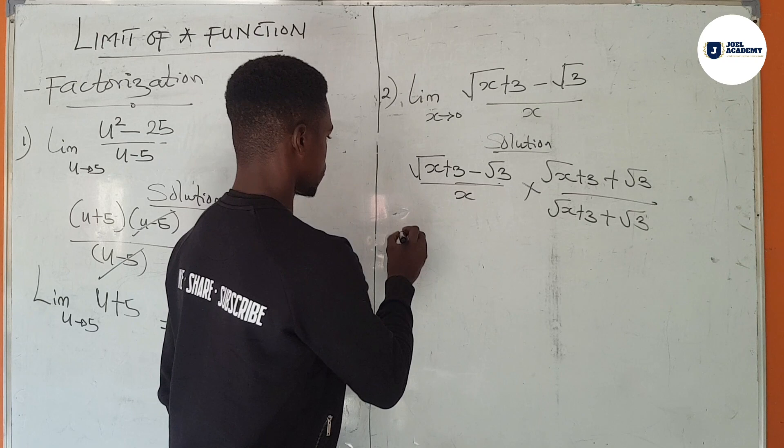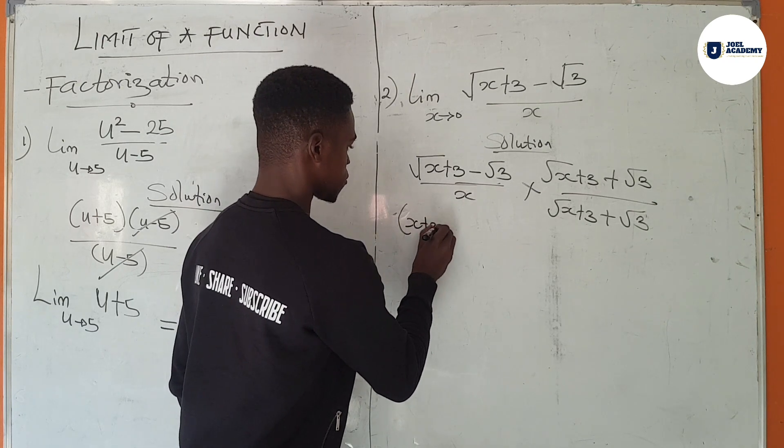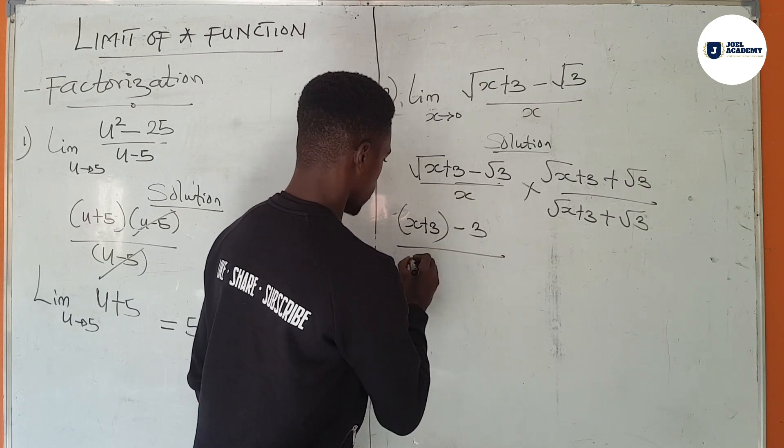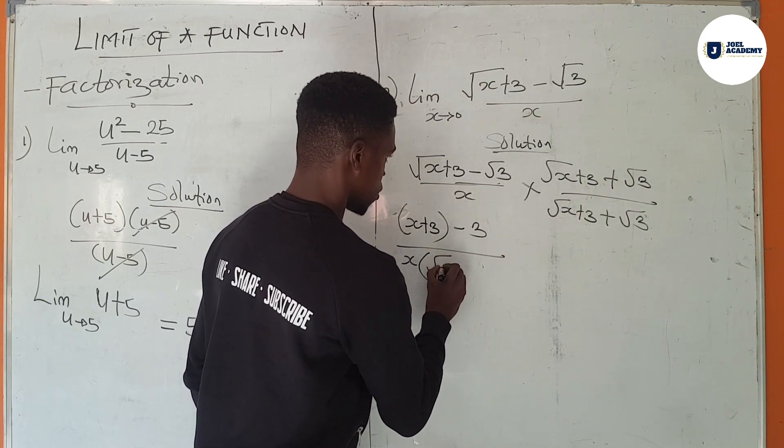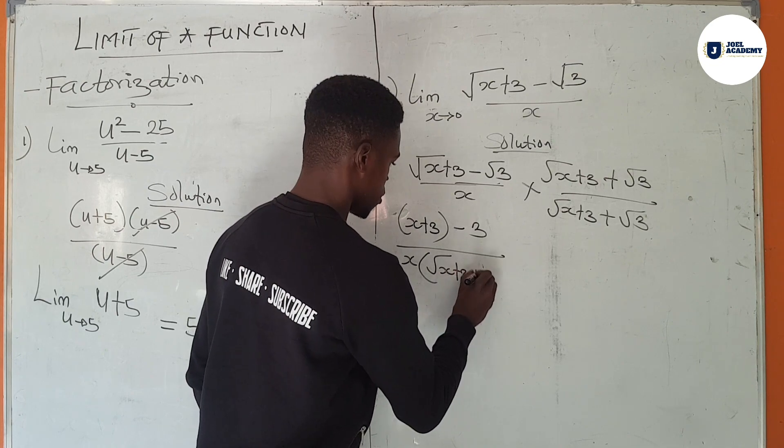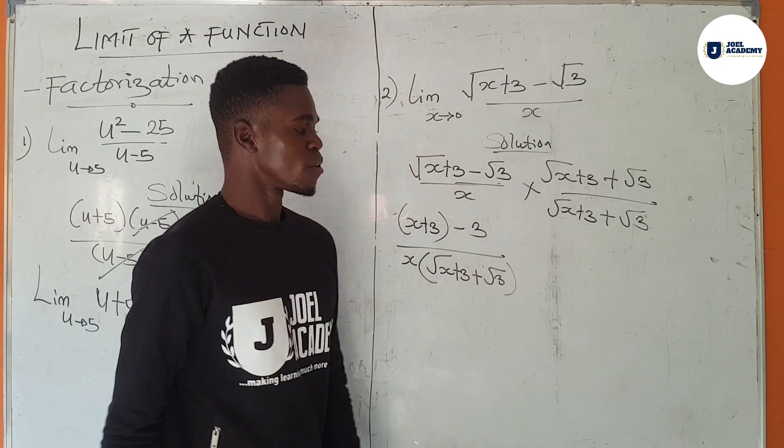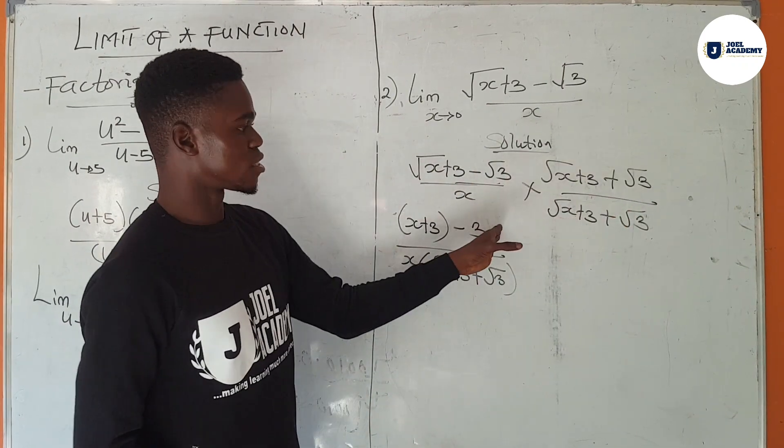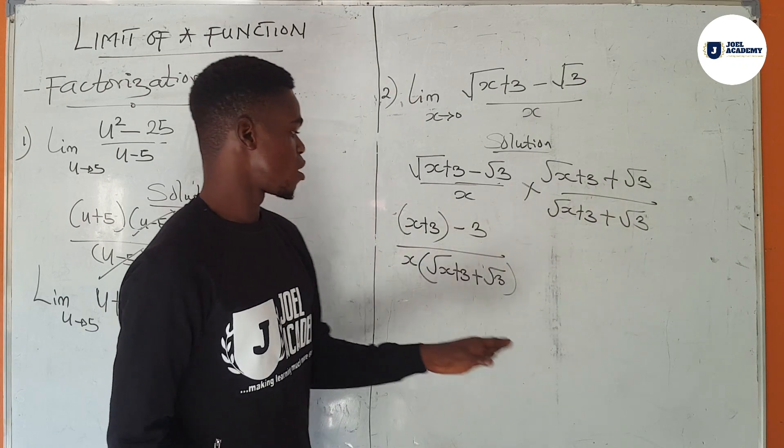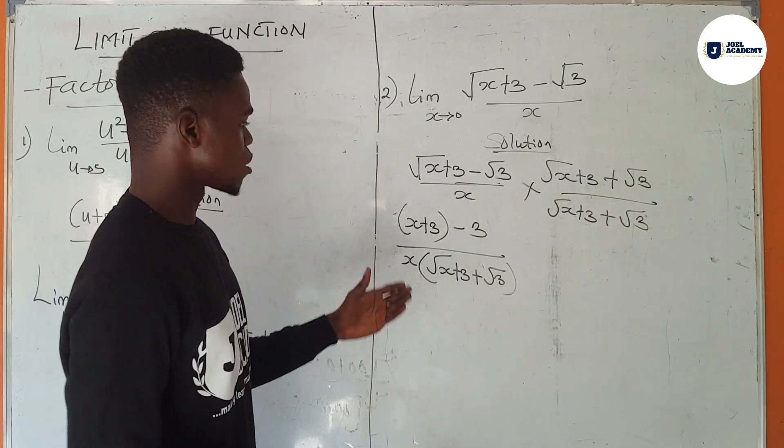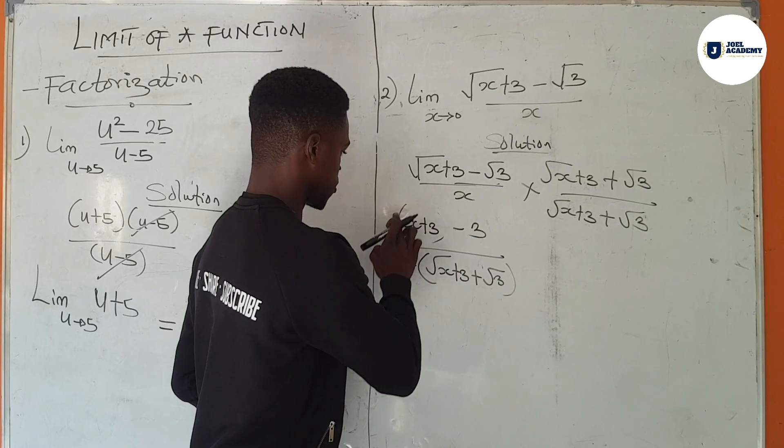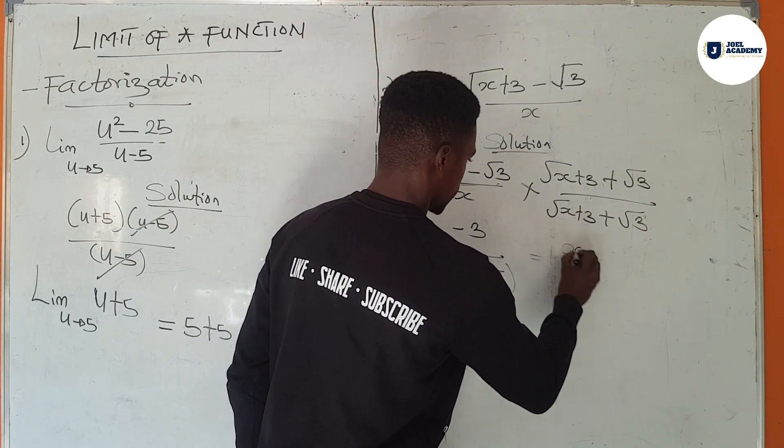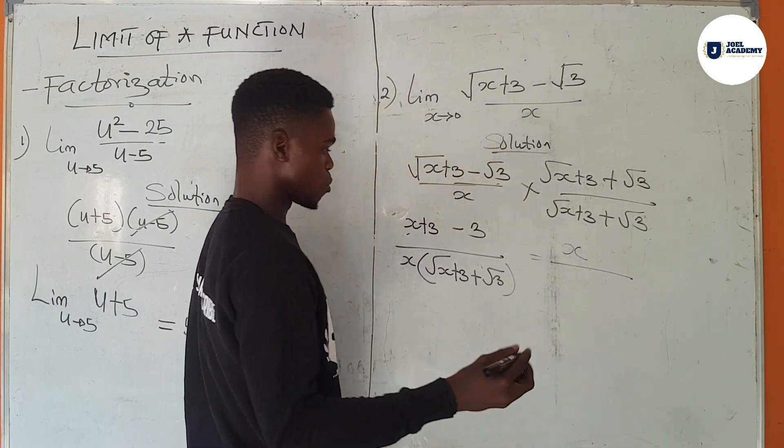We'll have x plus 3 minus 3 over x into all of this, square root of x plus 3 plus square root of 3. You multiply all of this by this, you get this. Then you multiply this by this, and then you get this. From this point, you can remove these brackets. So you have x plus 3 minus 3, and then you have x times square root of x plus 3 plus square root of 3.